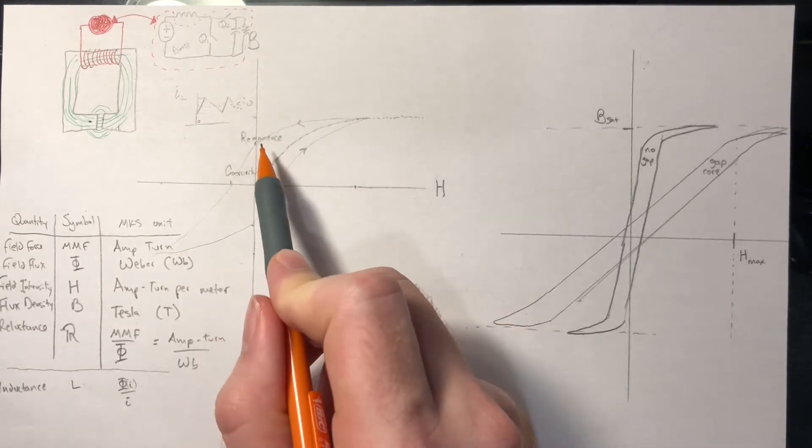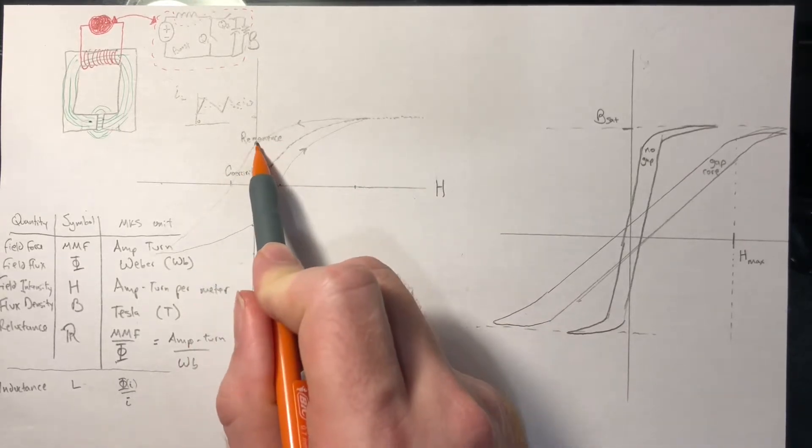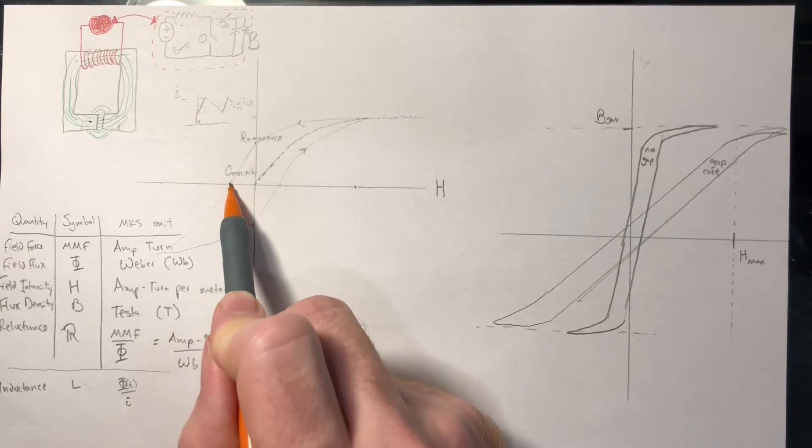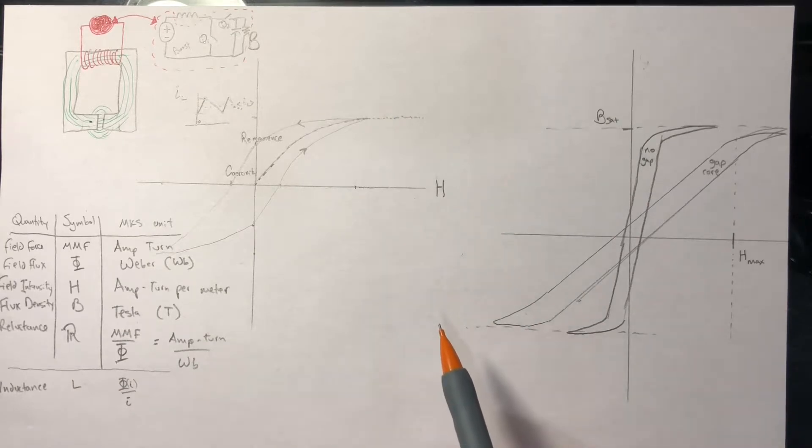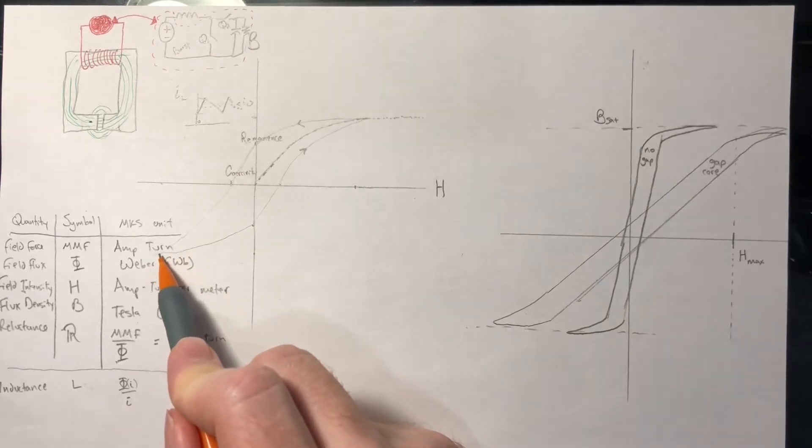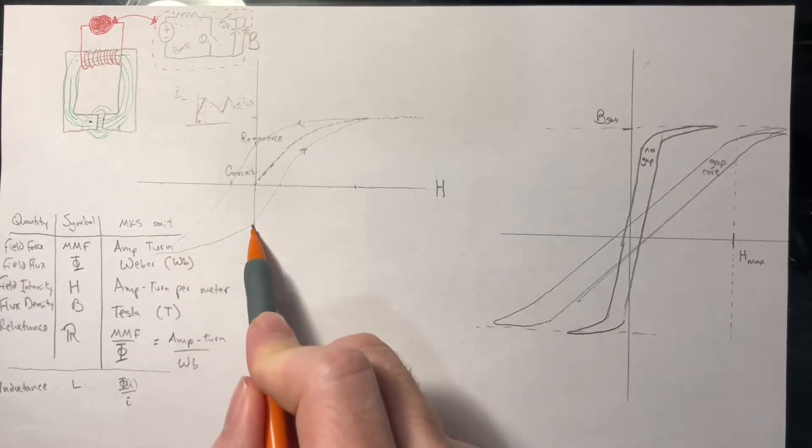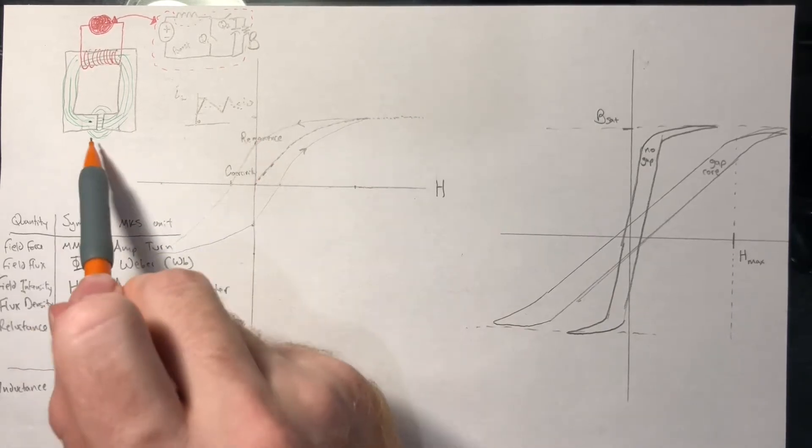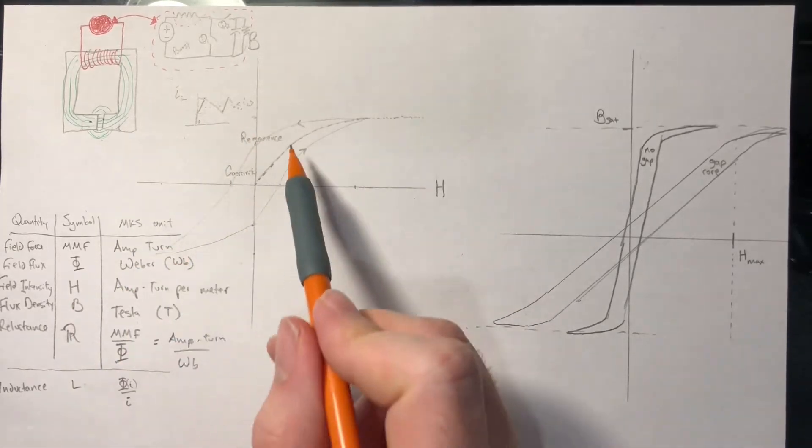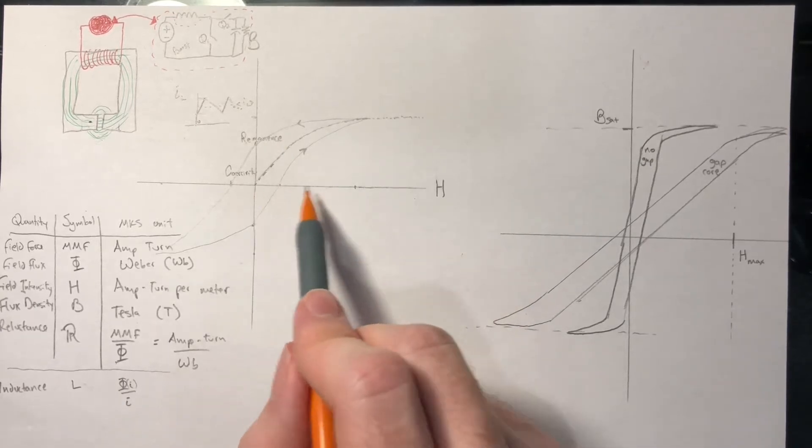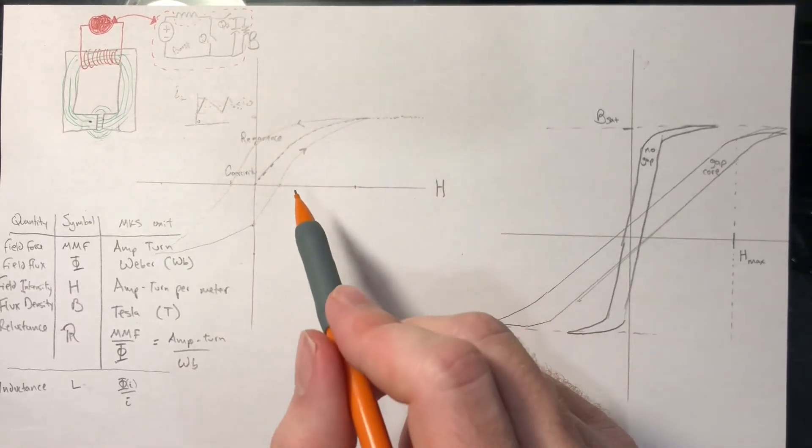And in order to make the material demagnetized, we actually have to provide excitation in the reverse direction. The amount of excitation we have to provide, this negative H, is called the coercivity of the material. We can see that the same thing happens with reverse polarity if we increase H in a negative direction. We eventually run out of dipoles to flip and there's remnants here. The remnants is the opposite direction, so if this was magnetic flux in one direction, now if we excite it negatively and leave it, it'll be magnetic flux in the opposite direction. Same thing, there's coercivity. We need to increase H positively now to demagnetize it completely.